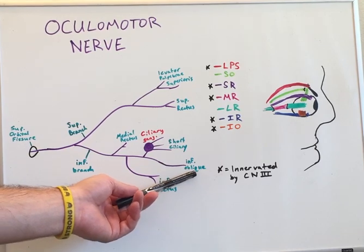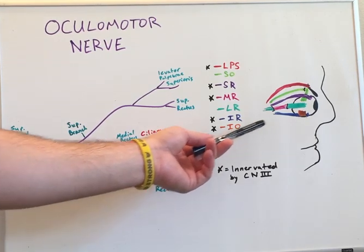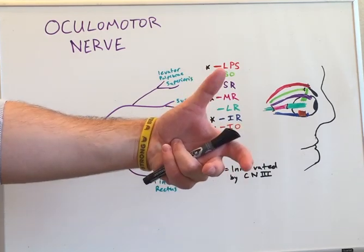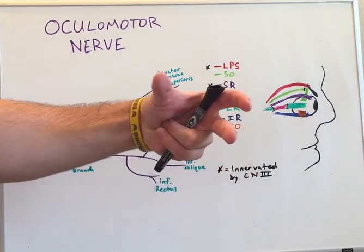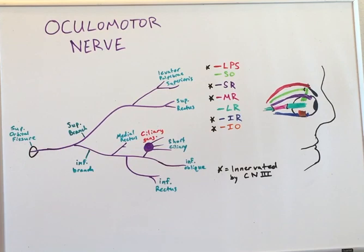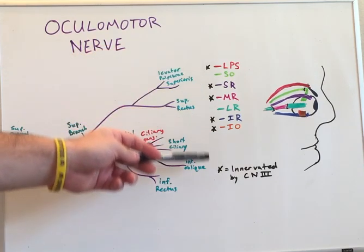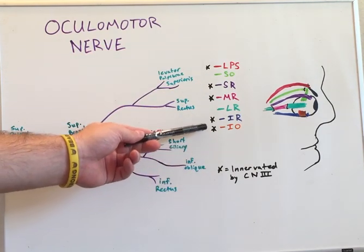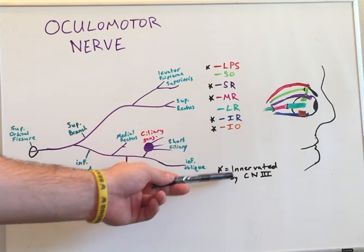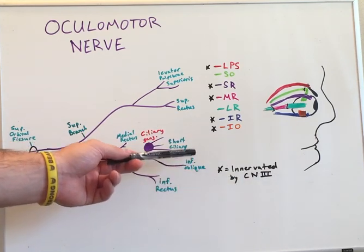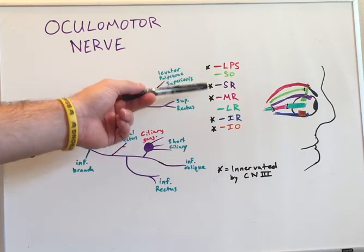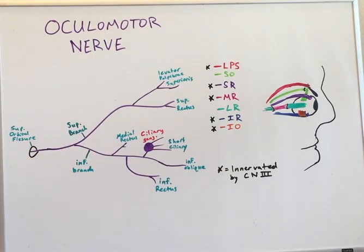Continuing on to the inferior oblique muscle, seen here in orange, which functions to adduct the eye as well as tilt it in an upward gaze. As you can see from this diagram, any of the muscles with a star next to it are innervated by cranial nerve 3. The other muscles will be discussed in a further cranial nerve lecture.